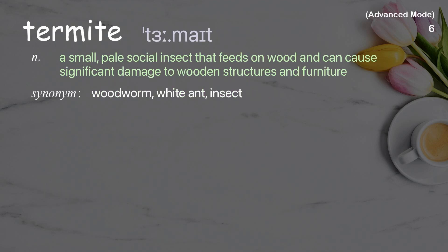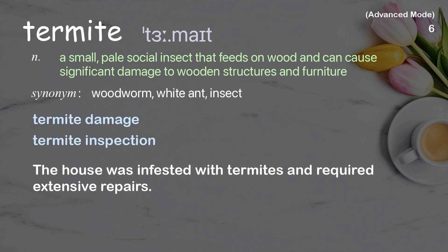Termite: a small, pale social insect that feeds on wood and can cause significant damage to wooden structures and furniture. Examples: termite damage, termite inspection. The house was infested with termites and required extensive repairs.